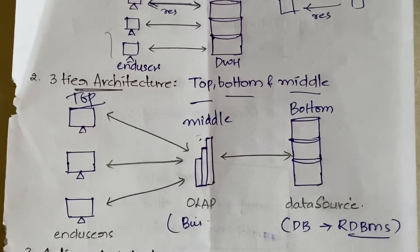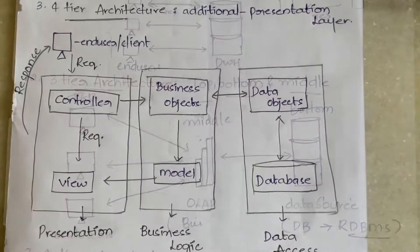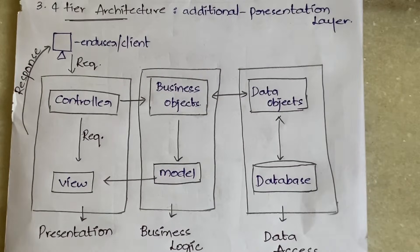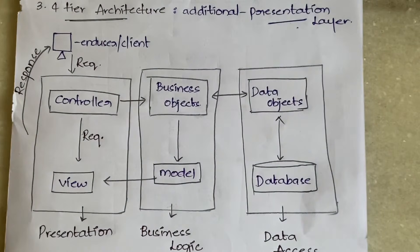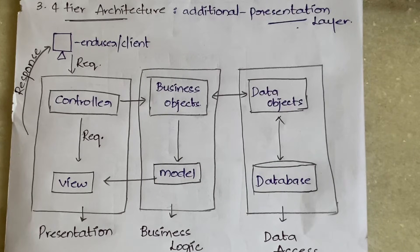So that covers two-tier and three-tier architectures. Now let us see what is additionally added in four-tier architecture. In four-tier architecture we have an additional layer — the presentation layer — which handles how the data is presented to the user. We add this presentation layer in four-tier architecture just to present the data in a more detailed and better way.